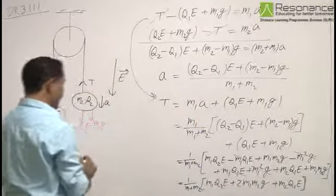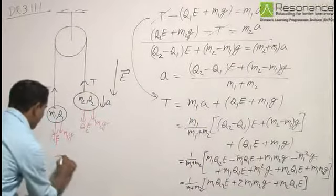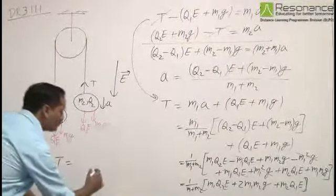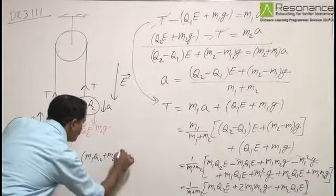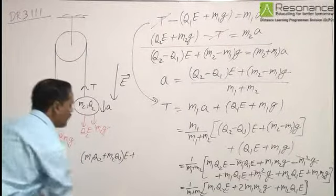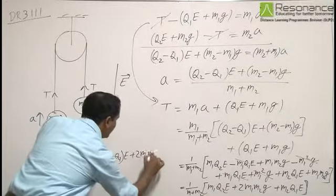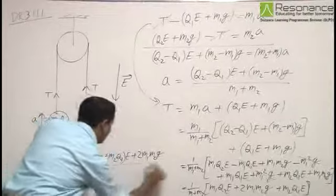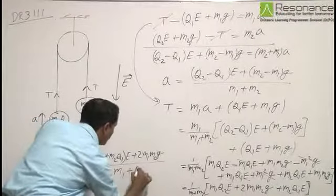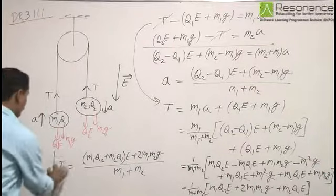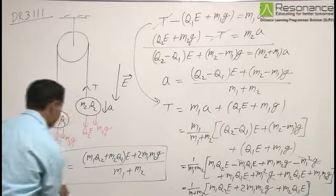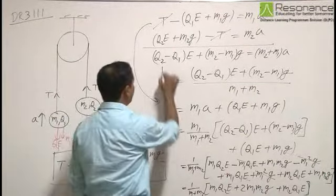Here from this we have the resultant T to be equal to (M1Q2 plus M2Q1)E plus 2M1M2g, all divided by (M1 plus M2). This is the tension in the string and acceleration we have already got. This completes the solution.